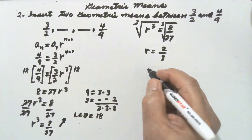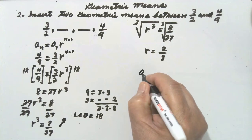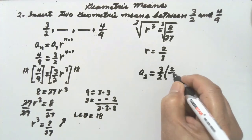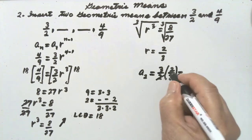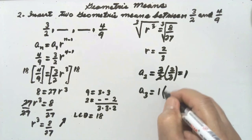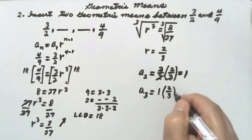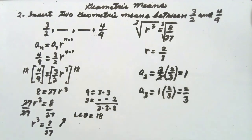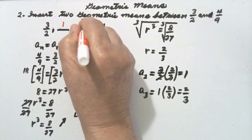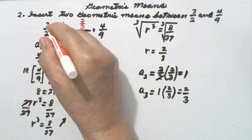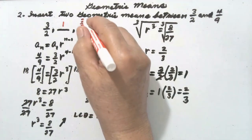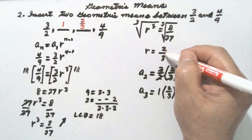We can now solve for the missing geometric means. A sub 2 is equal to a sub 1 which is 3 over 2, multiplied by the common ratio 2 over 3, giving 1. A sub 3 is 1 times 2 over 3, giving 2 over 3. To check: multiply 3 over 2 by 2 over 3 to get 1, multiply 1 by 2 over 3 to get 2 over 3, and multiplying 2 over 3 by 2 over 3 gives 4 over 9. The two missing geometric means are 1 and 2 over 3.